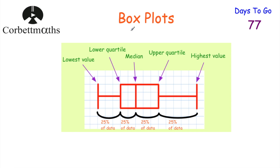Today we're going to be looking at box plots. Some people call this box and whisker diagrams, but I tend to call it box plots. Whenever you draw a box plot, you draw five vertical lines: the lowest value, the lower quartile, the median, the upper quartile, and the highest value. You find the lowest value as your first line, work out the lower quartile a quarter of the way through the data, find the median as your middle line, then the upper quartile three quarters of the way through, and then your highest value. You connect the lower quartile to the upper quartile as a box, and then draw whiskers connecting the box to the lowest value and to the highest value.